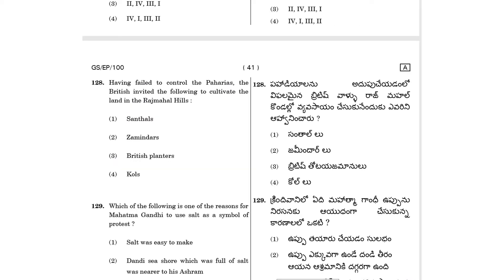Question 128: Having failed to control the Pahariyas, the British invited the following to cultivate the land in the Rajmahal hills.